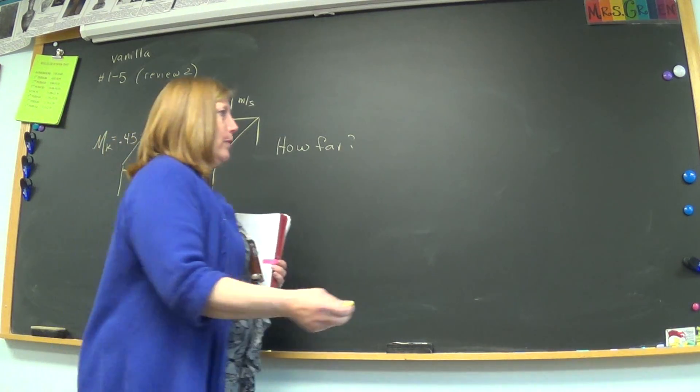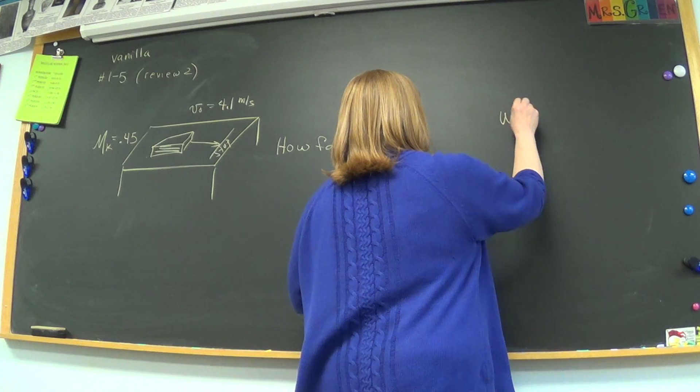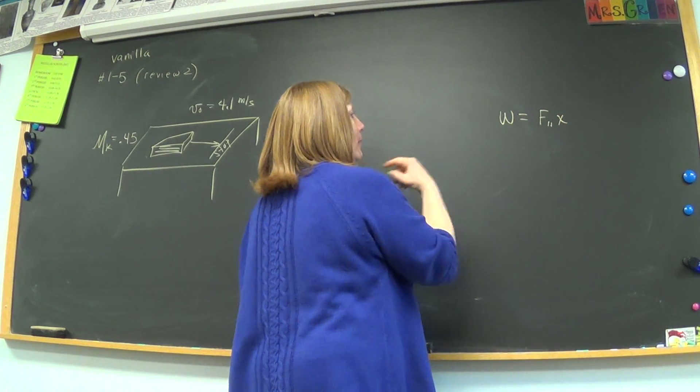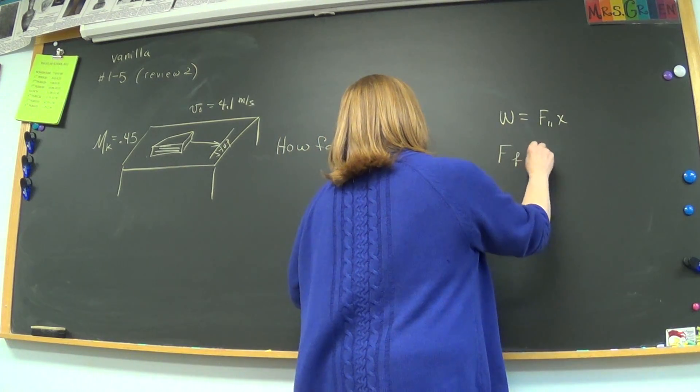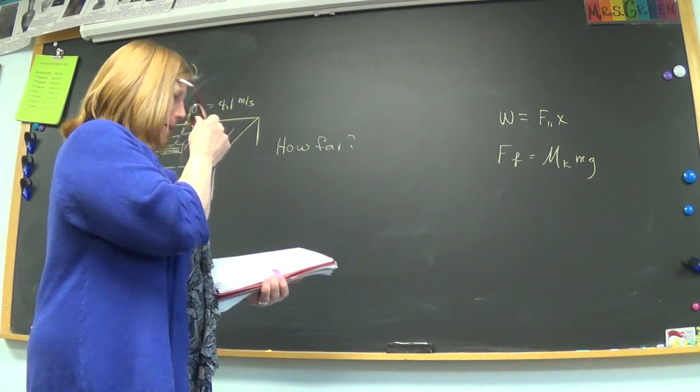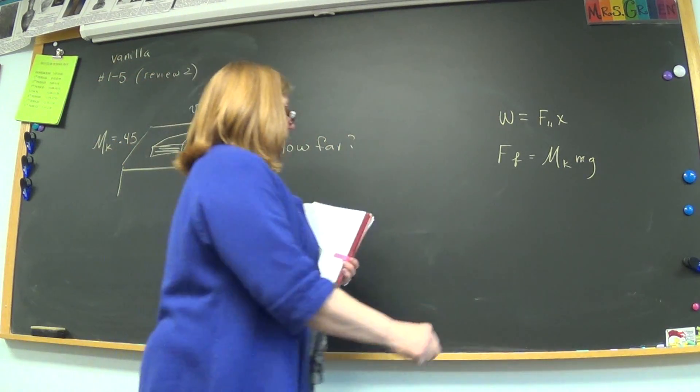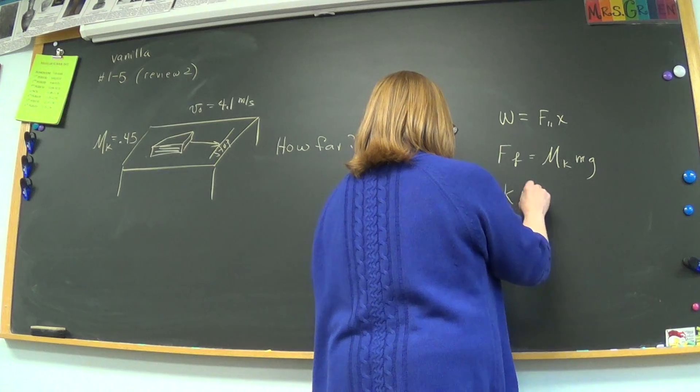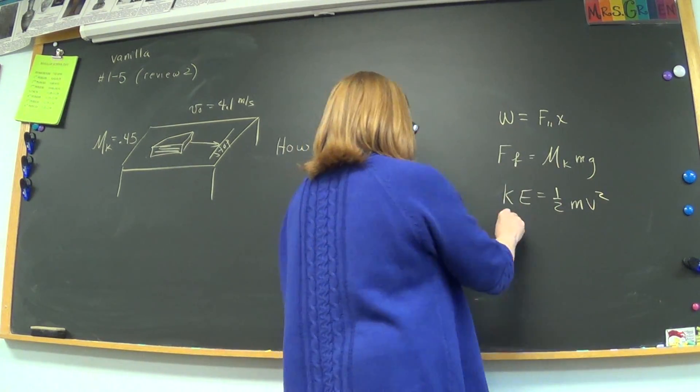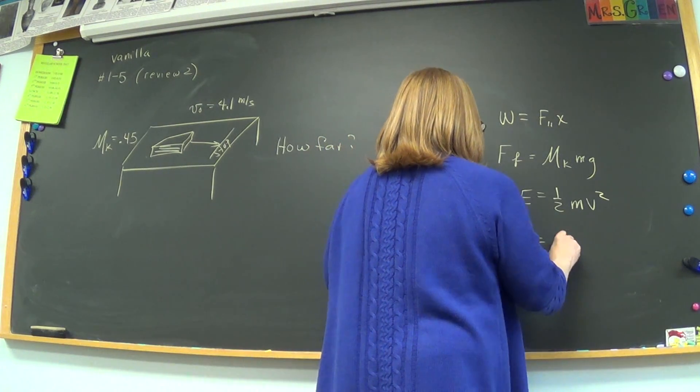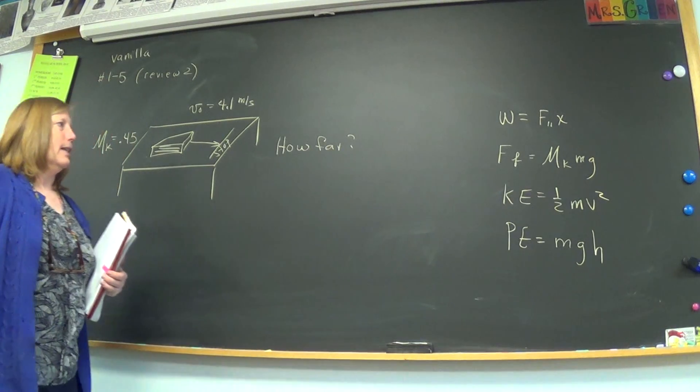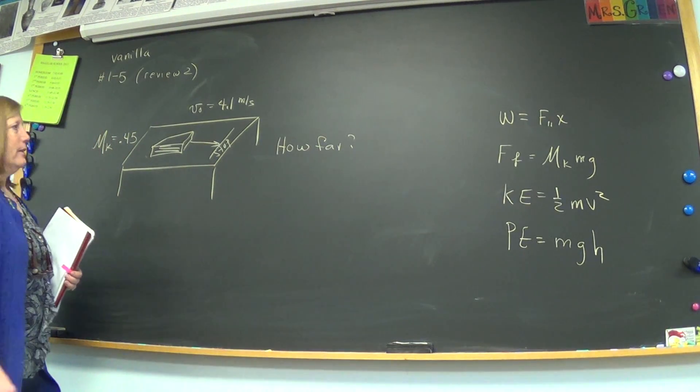We had a list of formulas up here. Work equals force parallel times x and another one is the force of friction, mk mg usually is the form that we need, and KE is one half mv squared. Are these showing up over here on the board? Yes. And PE equals mgh. Alright, those should get us through our worksheet today, and this problem as well.